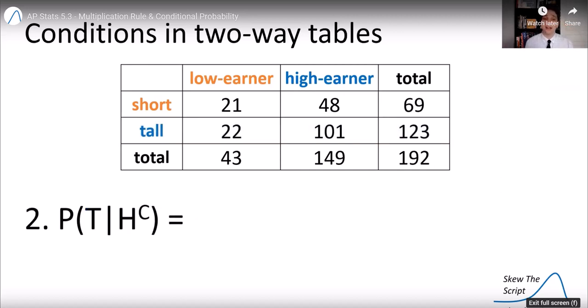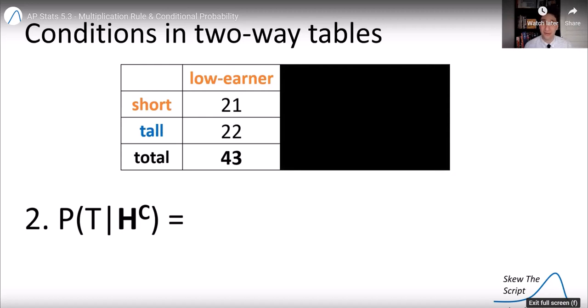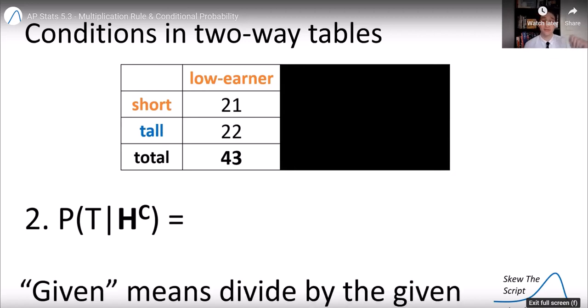Now let's put a condition in there. Let's find the probability of they're tall given they were not a high earner, given they were a low earner. So if I know for sure they're a low earner, I can ignore all that part of the table. I'm just going to look at those who were low earners. So the new total, the new total number of possibilities is that column total of 43.